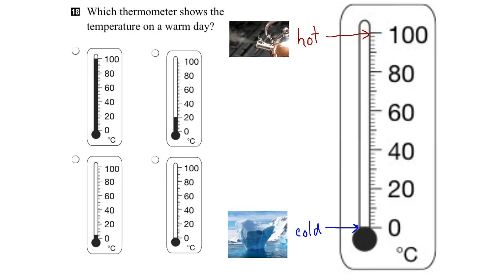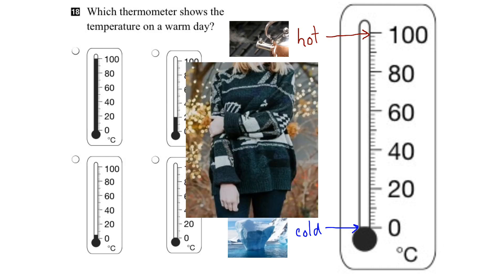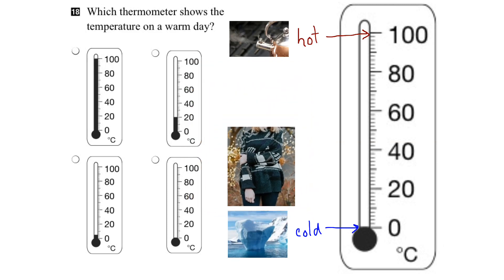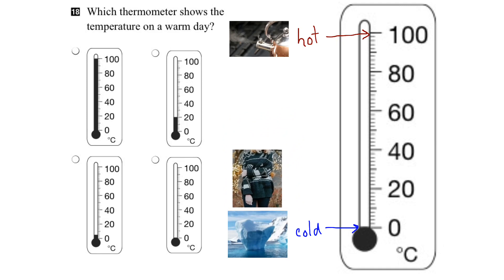So we've got the extremes — hot and cold — and warm would be somewhere in between. Let's look at things that are warm and cool. You might think about autumn and wearing a sweater because things start to get cool in the fall. Where would cool be on our thermometer? Water hasn't frozen yet, but it's not warm and we're not going to the beach, so probably around 10 degrees Celsius for a cool day.